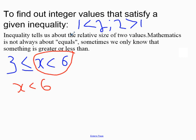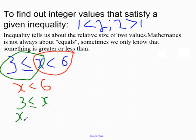The second part is 3 less than or equal to x. Now, if you understand the concept that 1 less than 2 means 2 is greater than 1, you would know that if you put the x in front, the sign has to change, and so x will be greater than or equal to 3. The numbers we are dealing with are any number greater than or equal to 3, but less than 6.